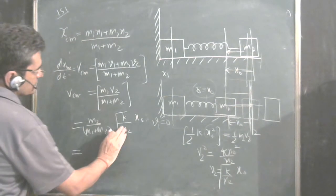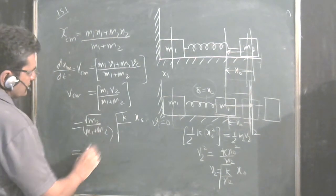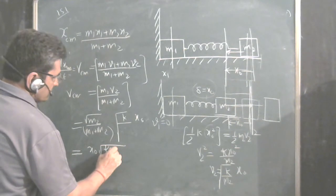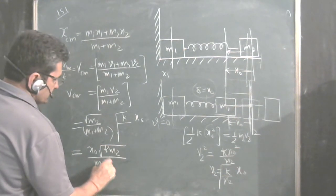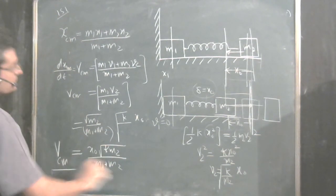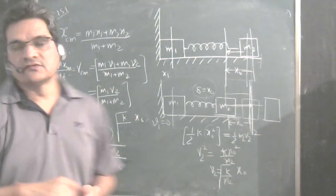Solve it. You get, this gets cancelled root. So X0 root K M2 upon M1 plus M2 is the velocity of center of mass. So that solves the problem.